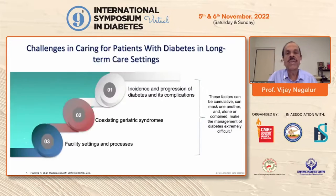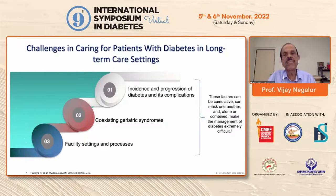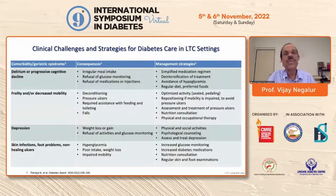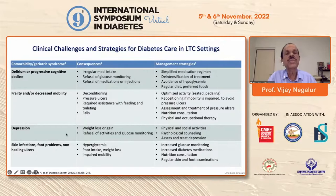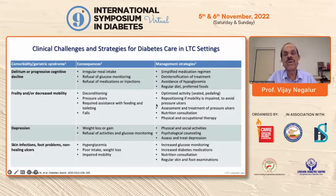The challenges for treatment of elderly populations include the incidence and progression of diabetes and its complications, coexisting geriatric syndromes, and the care facility setting. Challenges include delirium and progressive cognitive decline causing irregular meals, requiring simplified modification of regimen and de-intensification of treatment — a very important concept. Avoidance of hypoglycemia is a major concern. Frailty and decreased mobility cause deconditioning, pressure ulcers, and need for assistance with feeding and toileting, with an increased tendency to fall, requiring strategies for optimized activities.